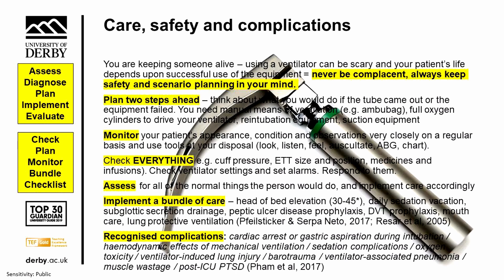We should also assess for all the normal things a person would need. We are breathing for them, but we need to think about everything else and implement care accordingly. There are care bundles we can use, including head of bed elevation, daily sedation vacations, continuous subglottic secretion drainage, peptic ulcer prophylaxis, DVT prophylaxis, mouth care, and lung protective ventilation. Most intensive care patients are on these bundles today, and we know they actually reduce the amount of time on a ventilator and prevent injury.